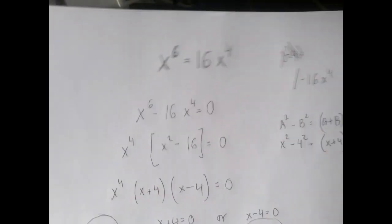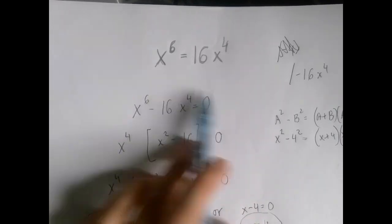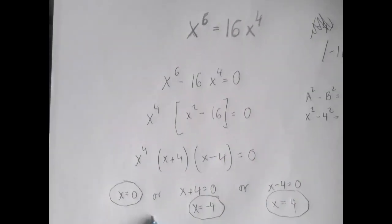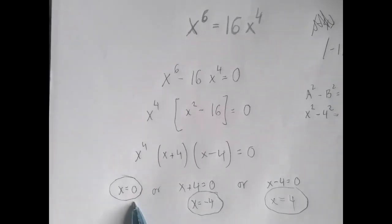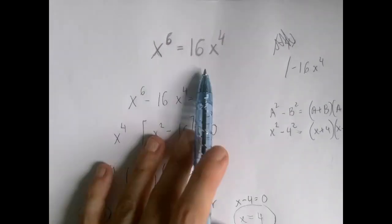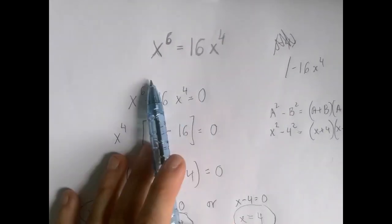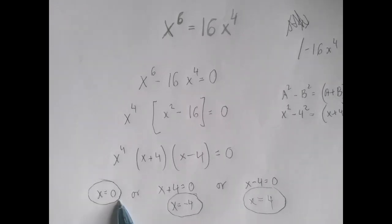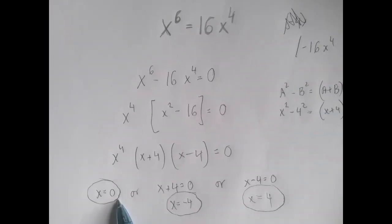One more comment. It's tempting to divide by x^4. But if we do that, we're actually dividing by zero, right? One of the solutions is zero, and we would lose solutions. If we divided both sides by x^4, we would get x^2 = 16, x = ±4. So we would lose this solution, which is why we should never divide by something that could be zero.